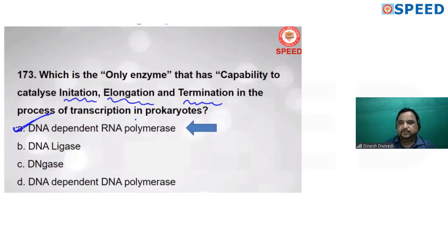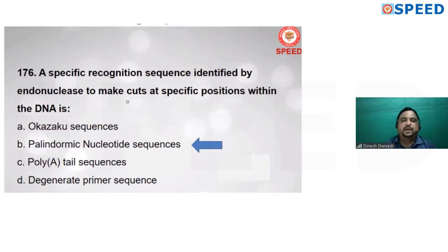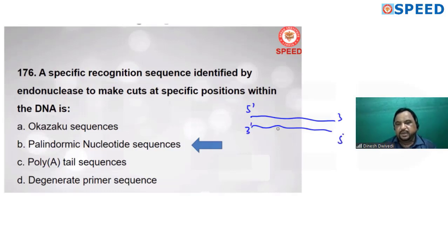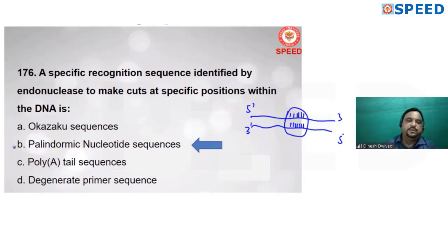A specific recognition sequence identified in the nucleus to make cuts at specific positions within DNA — endonuclease already makes cuts at specific positions where palindromic sequences are present. A palindromic sequence means that on both DNA strands (5' to 3' and 3' to 5'), the nucleotide sequence is the same but in opposite directions. Alternate B is correct.